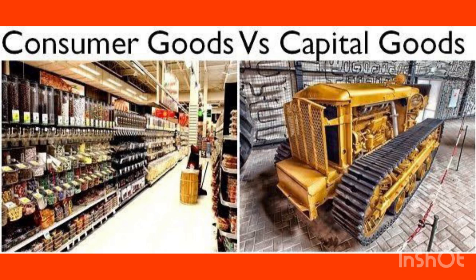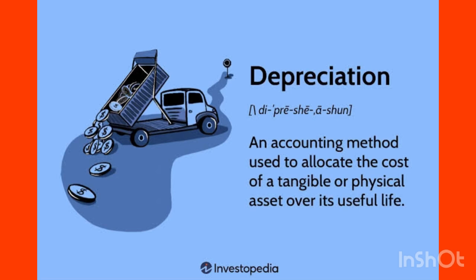Consumer goods are goods we buy for final consumption — for example, buying a TV for personal use. Capital goods, on the other hand, are not bought for personal consumption. We use capital goods for making another product, for further production of something else. Examples include machinery and factories.